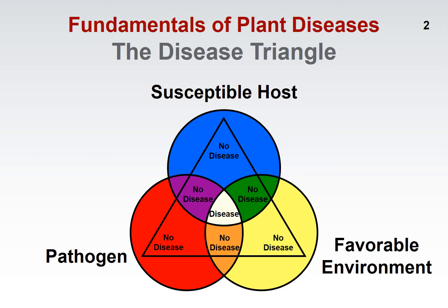We're going to talk a lot about what we call symptoms — basically abnormalities that can be caused by different types of diseases. While the triangle is very useful for thinking about what a disease is, it's also very useful for thinking about disease control. A lot of the techniques we use for managing disease are basically designed to eliminate or at least reduce the importance of one or more of the corners on this triangle.